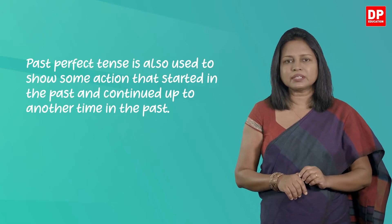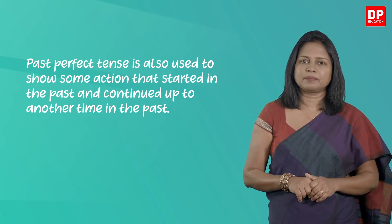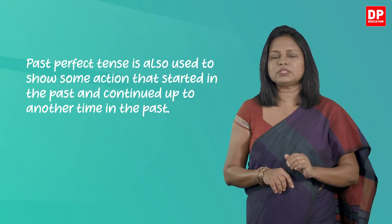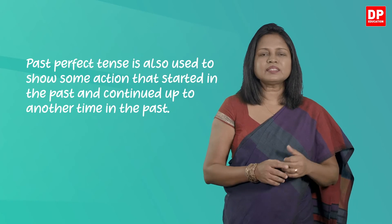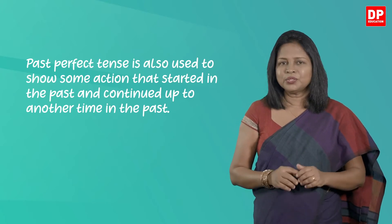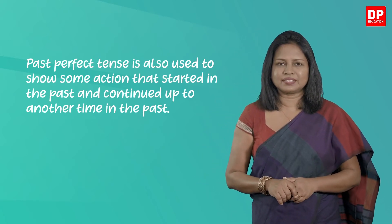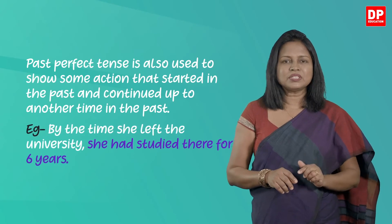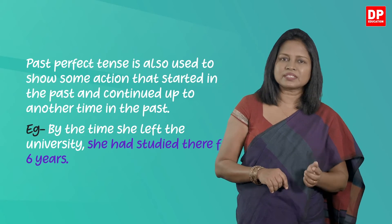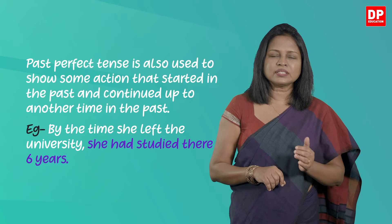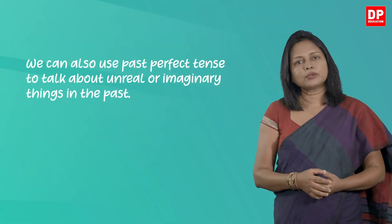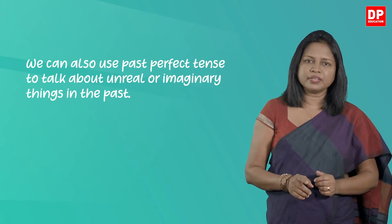Past perfect tense is also used to show an action that started in the past and continued up to another time in the past. The past perfect verb in this situation tells us how long an action continued up to a point in the past. This is just like the present perfect, but this time the action continues to a point in the past, not till the present. Usually we use 'for' to indicate the time period. For example: 'By the time she left the university, she had studied there for six years.' Her action of studying continued up to some point in the past and doesn't continue anymore.